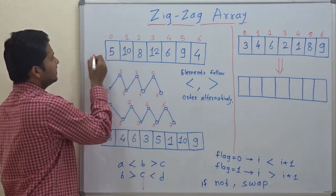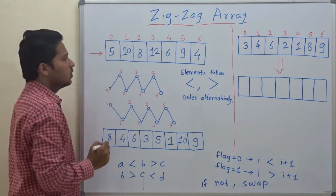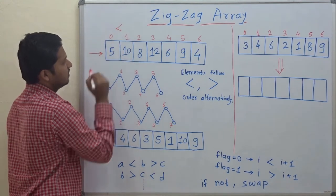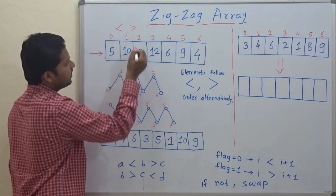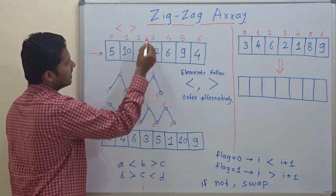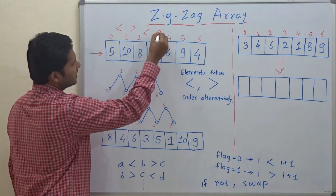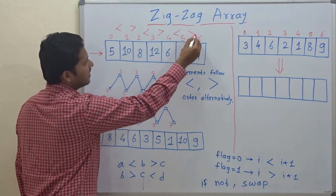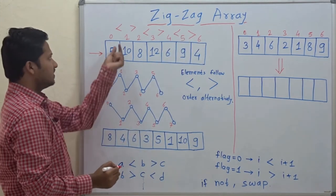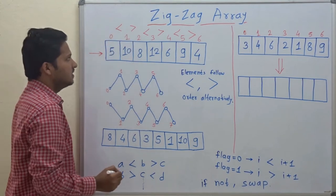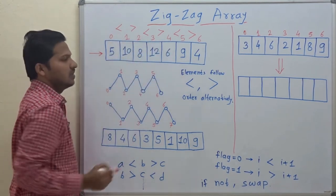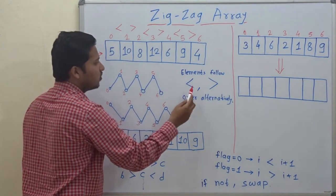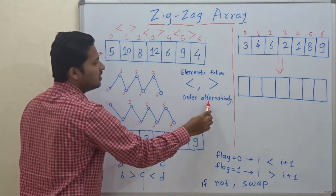This array is a zigzag array. You can observe: 5 is less than 10, 10 is greater than 8, 8 is less than 12, 12 is greater than 6, 6 is less than 9, and 9 is greater than 4. The less than and greater than operations are alternatively placed. So a zigzag array is one in which the elements follow less than and greater than order alternatively.